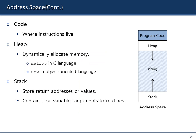You're all familiar with this from COMSCI 131. You have the code, the heap — malloc in C, or new in C++. For Java, there's the Java Virtual Machine, whereas in C++ the translation is directly to assembly. The stack is used to store the return address or values and contains local variables and arguments to functions.